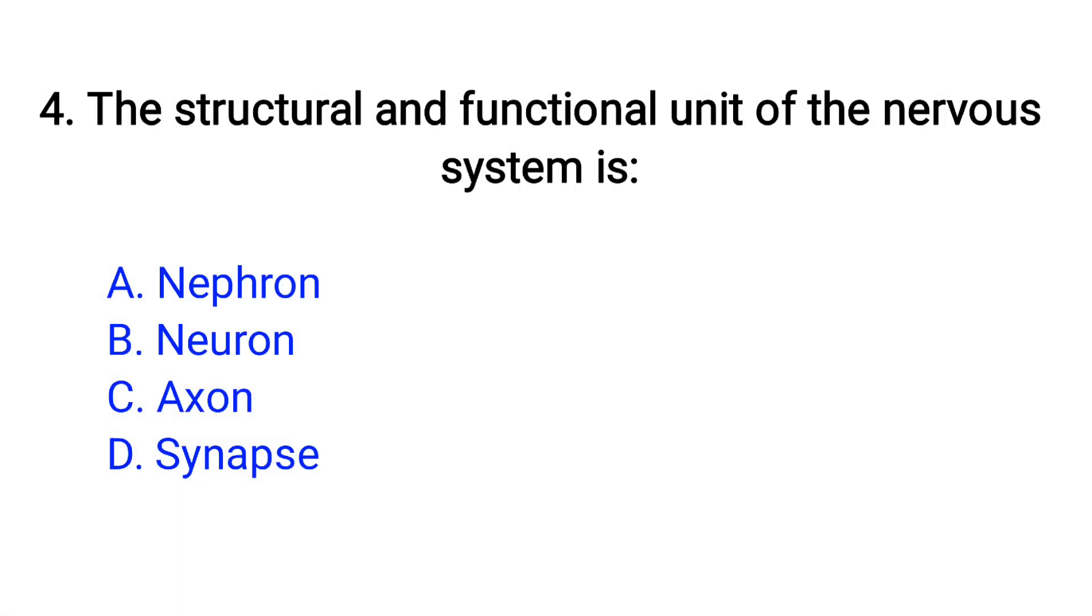Question number 4. The structural and functional unit of the nervous system is? Option A: Nephron, B: Neuron, C: Axon, D: Synapse. The right answer is option B, Neuron.